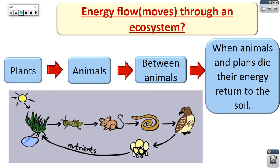That is the flow of energy in the food chain. When the hawk dies, the chemical energy inside its body will not be wasted. There are other living organisms called decomposers. Decomposers are living organisms responsible for eating dead bodies. When they eat the body of the hawk, they return the chemical energy back to the soil in the form of nutrients.